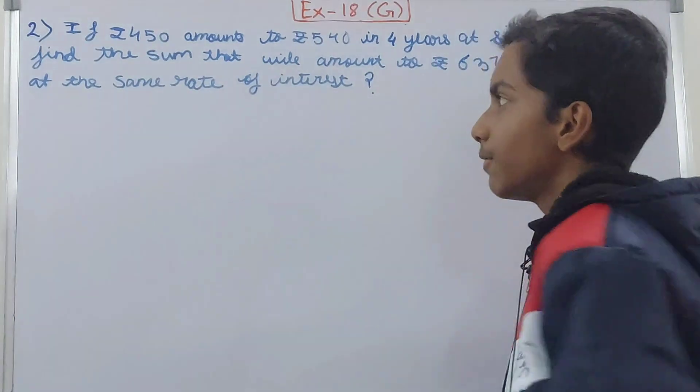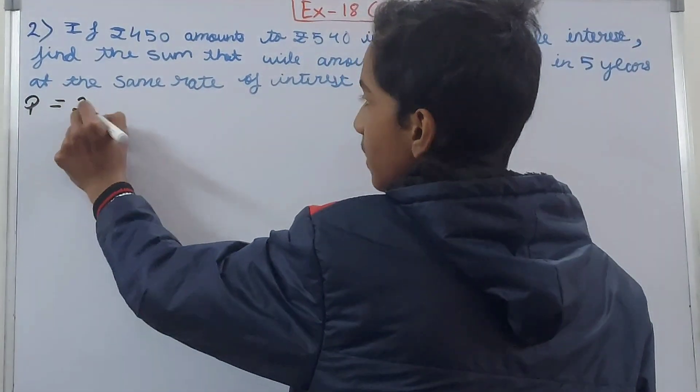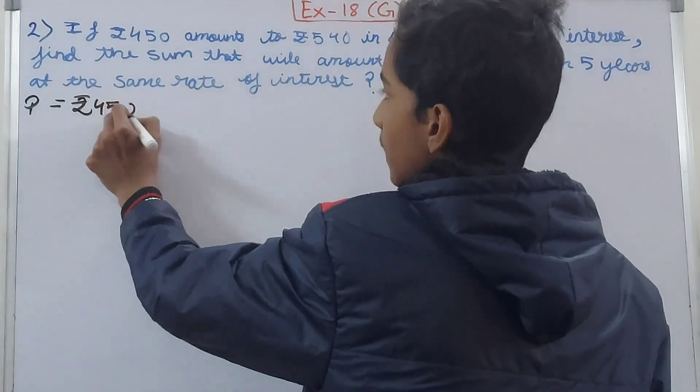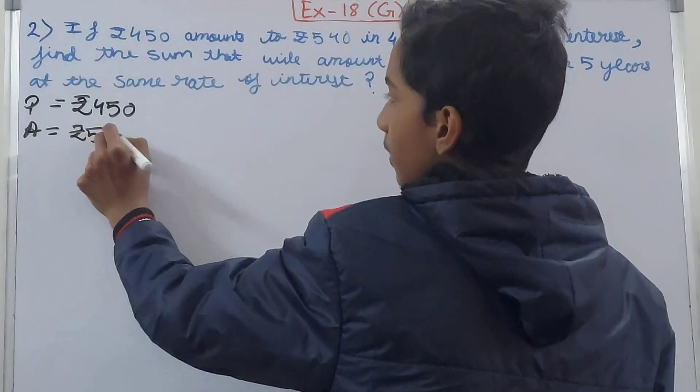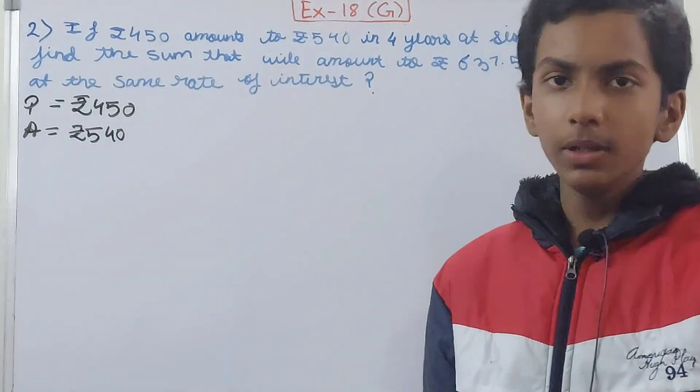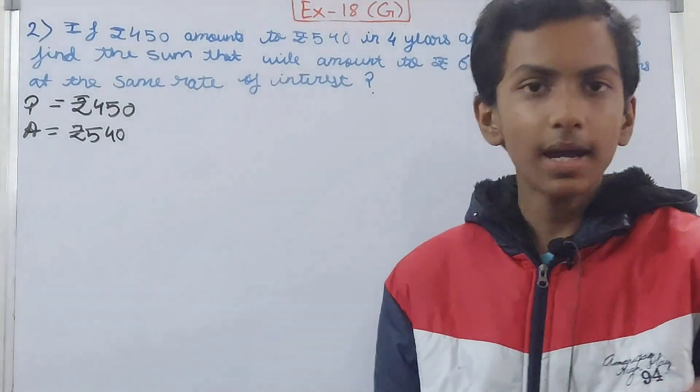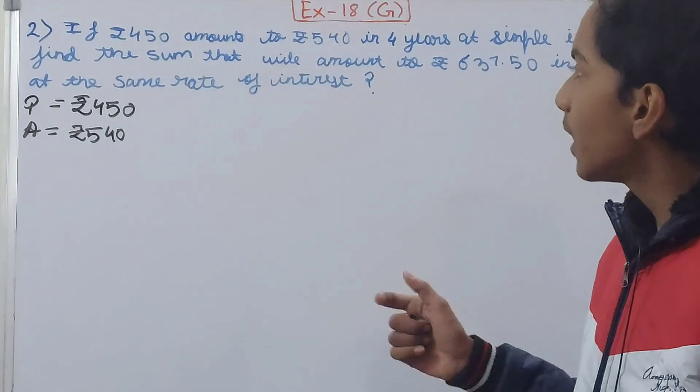That is the principal, that is ₹450, and the amount, that is ₹540. So just the digits are shuffled. This means we know the principal P = ₹450 and we know the amount A = ₹540.